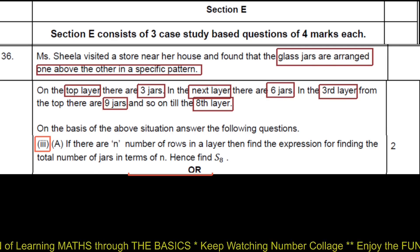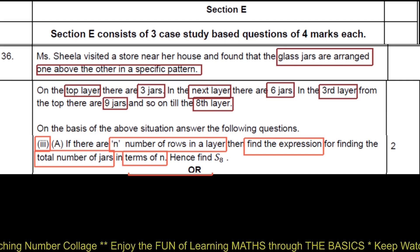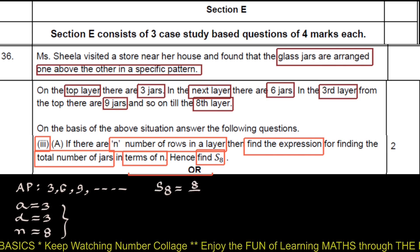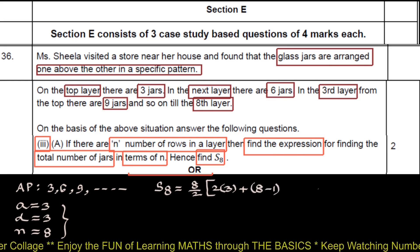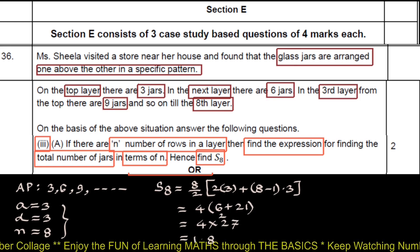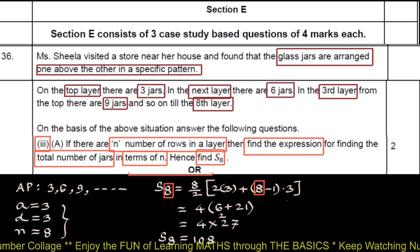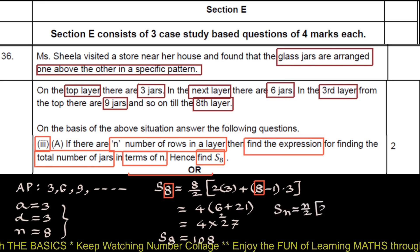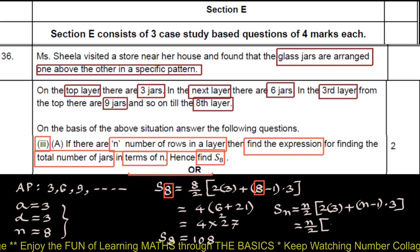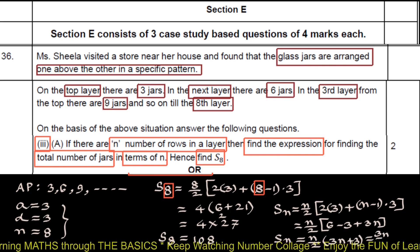Third sub question: If there are N number of rows in a layer, then find the expression for finding total number of jars in terms of N, and hence find S8. We have A equals 3, D equals 3, N equals 8. We have to find S8, which is 8 upon 2 into 2A plus N minus 1, 8 minus 1, into D, 3. This gives 4 into 6 plus 21 equals 4 into 27 equals 108. So sum of first 8 terms S8 is 108. Putting 8 equals N, we get the expression in terms of N: SN equals N by 2 into 2A where A is 3 plus N minus 1 into D which is 3. SN will be N by 2 into 3N plus 3, or 3N by 2 into N plus 1.